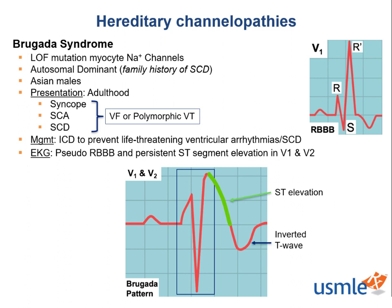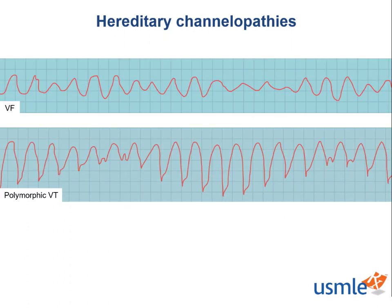That's essentially all you need to know about Brugada syndrome. Just look for an adult Asian male with a strong family history of sudden cardiac death. He may or may not present with a syncopal episode or unexplained V-fib or V-tach. If they give you this history and then an EKG pattern like this, be able to recognize V-fib and polymorphic V-tach, and you'll have this question in the bag.